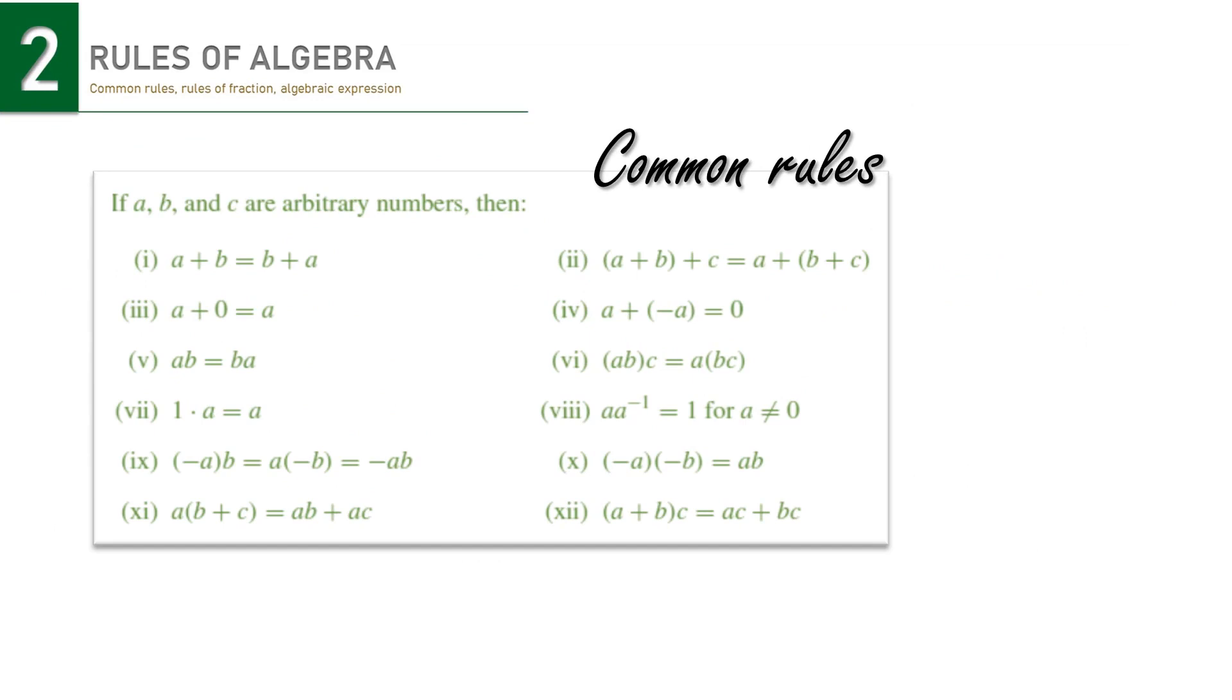Okay, now let's talk about the rules of algebra. Here are the common rules of algebra. You must have learned it since in junior high school maybe. They look simple and may be less meaningful if the application is just inserting numbers for a, b, and c. For example, this commutative law, of course, it applies to 1 plus 2 which would be equal to 2 plus 1. But it doesn't look interesting, does it?